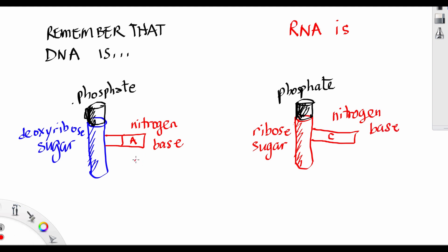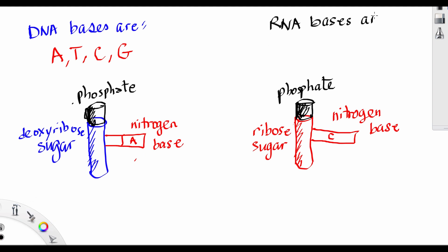The difference is in the nitrogen bases. DNA bases are A, T, C, and G. But RNA bases are A, U, C, and G. Uracil instead of thymine.